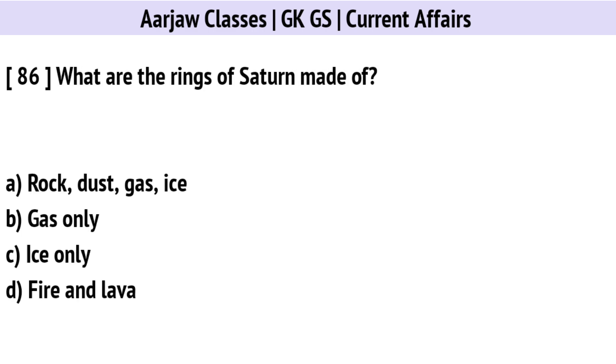What are the rings of Saturn made of? Correct option is A: Rock, dust, gas, and ice.